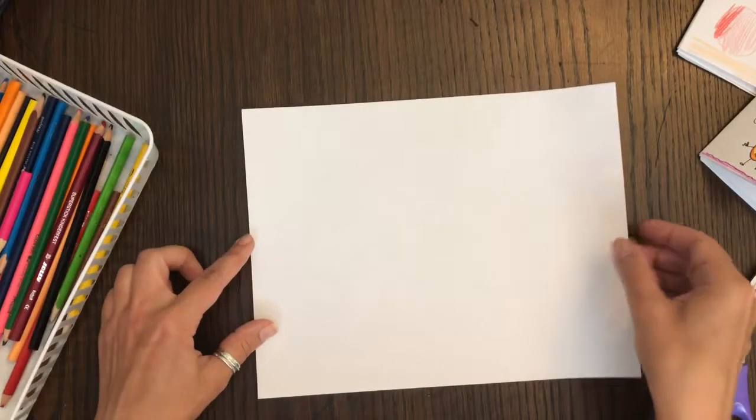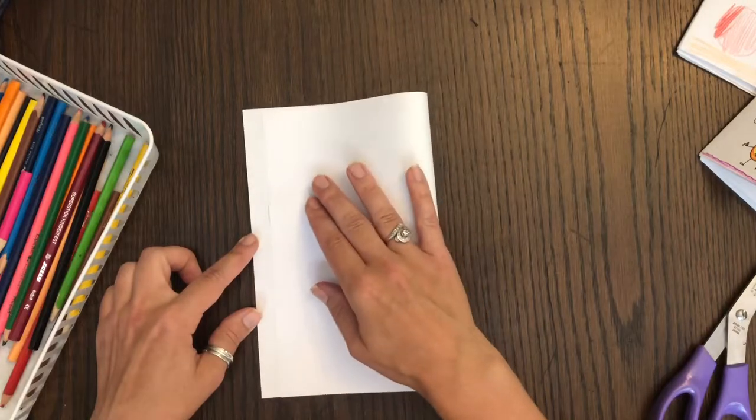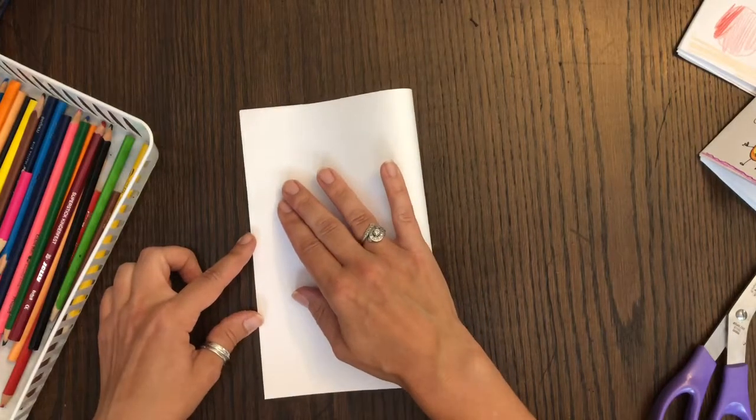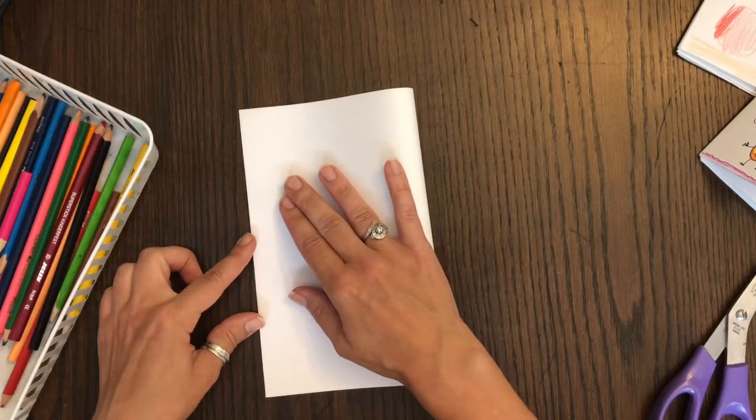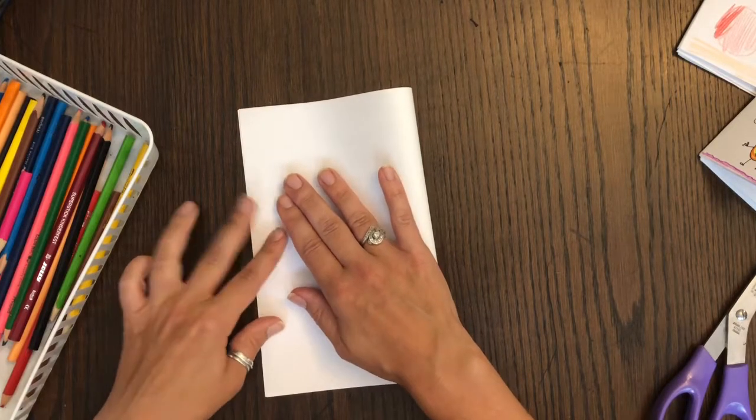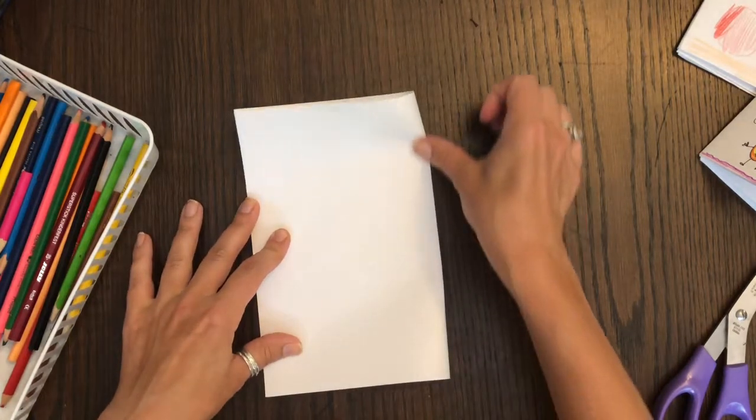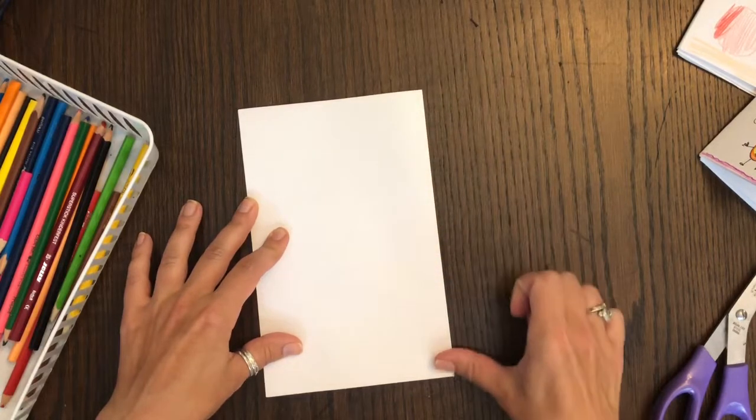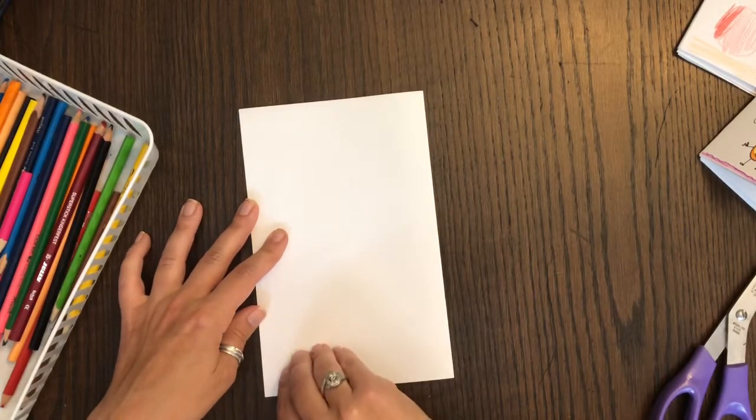I'm going to start by holding my paper horizontally and then folding together the two short sides of the paper. I'm going to take my time because it's important to try and match up the corners the best that I can and I'm going to run my finger along the fold to make sure that I get a nice sharp crease.